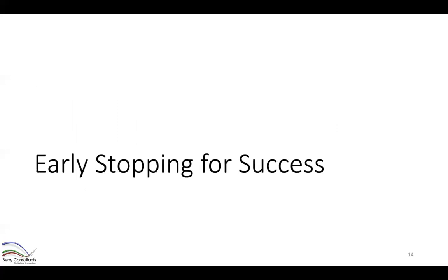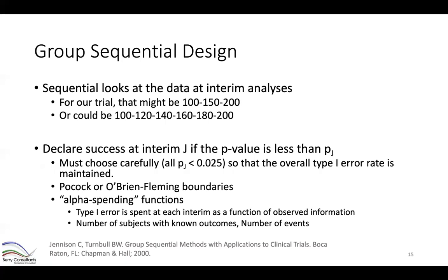I'll begin by talking about designs that stop early for success. A very common design is a group sequential design — the idea is to have sequential looks at the data at pre-specified interim analyses. For our 200-subject trial we might have interims at 100 and 150 subjects, or on a more frequent schedule such as every 20 subjects.